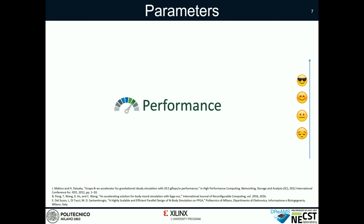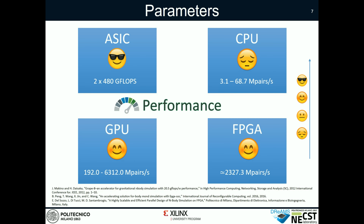The first parameter to be considered is performance, in terms of giga floating-point operations per second, or in terms of mega pairs per second, where pairs are the number of comparisons between two objects.